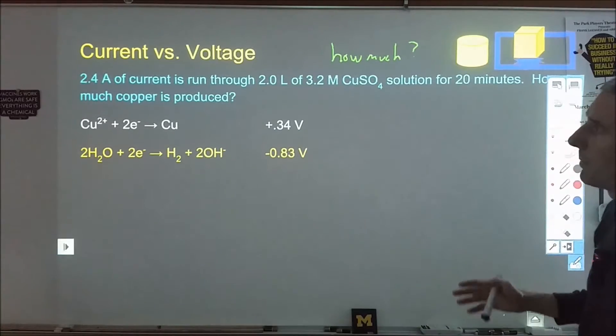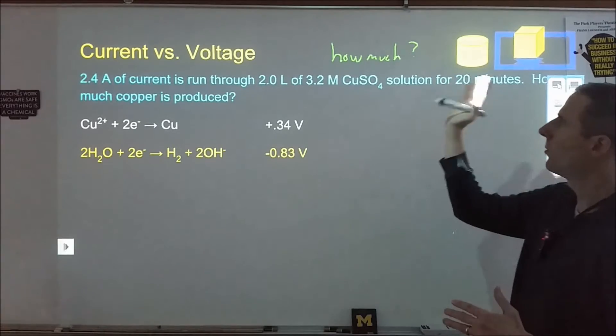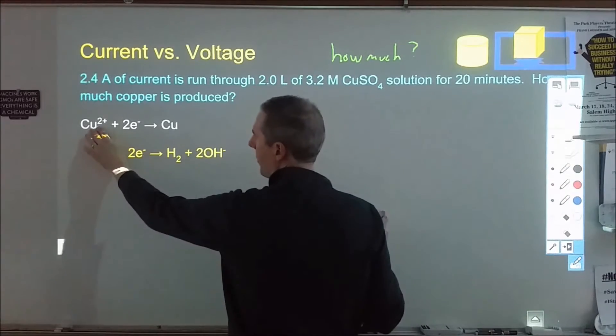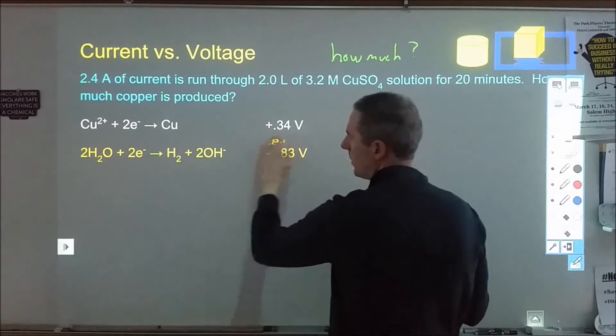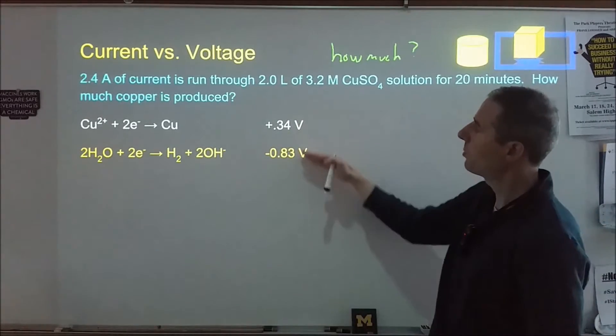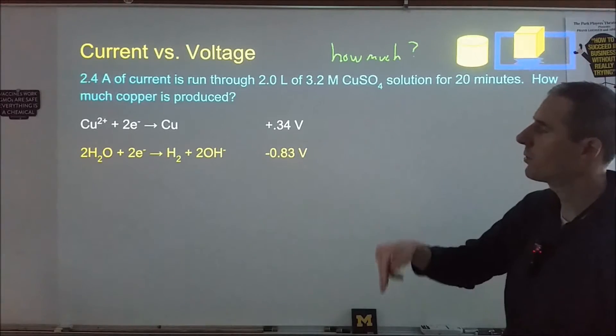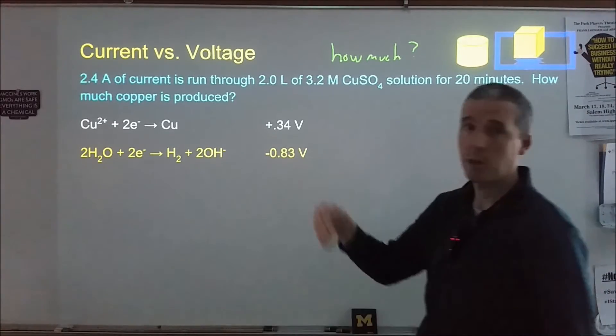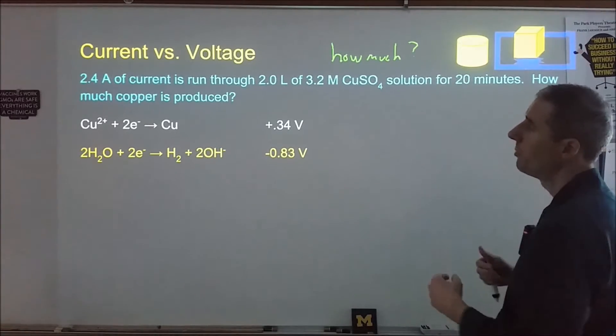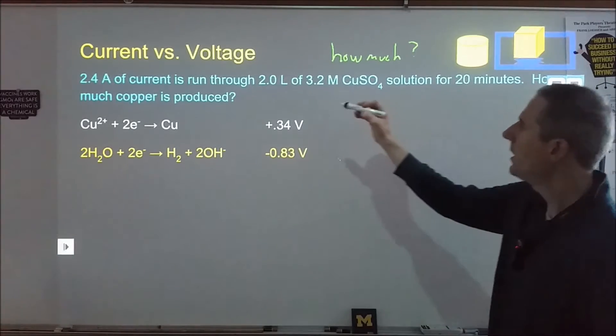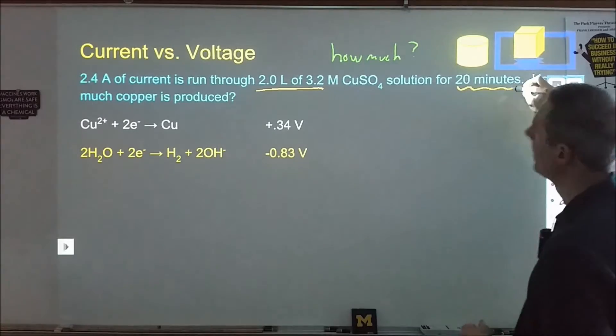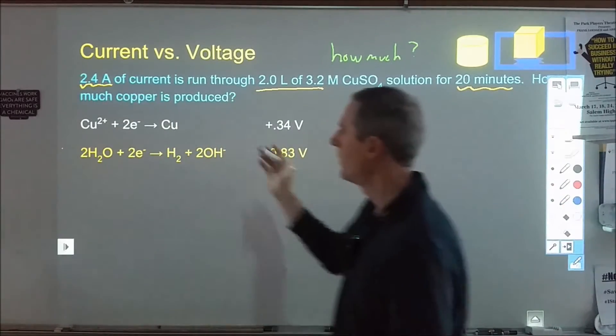Here we have a problem that's a coulometry problem. We have a certain amount of current running through a solution for 20 minutes. How much copper is being formed? If we look up the reactions here, we have copper ions becoming copper with this voltage. It's aqueous, so we could have the water gaining electrons forming hydrogen gas. But we see here that the copper is preferential. It's easy to push electrons onto the copper, much easier than to push them onto the water. So we're going to form the copper metal over the hydrogen gas. We're running 2.4 amps of current through 2 liters. These are distractors here. We're going to start with our time here and use our current later to figure out how much of this would form.